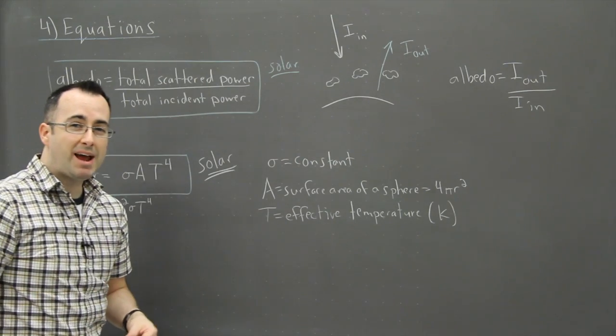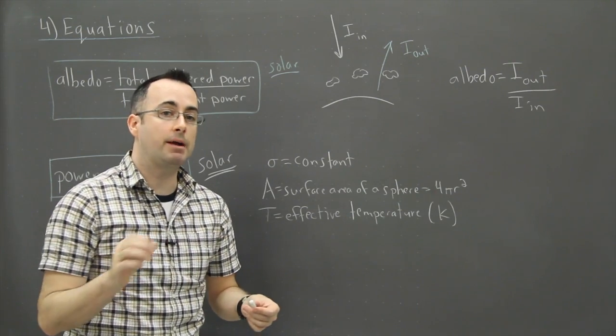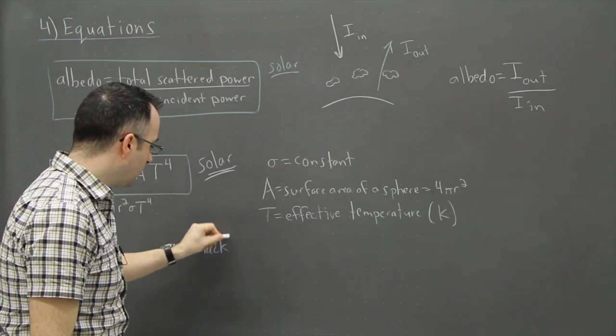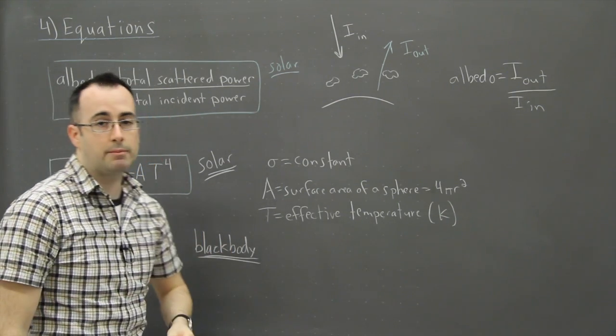Now what do I mean by an effective temperature? This is the key thing, is that we assume that stars are perfect black bodies. Okay, so this is, it's not a racist thing here. We actually assume that these are perfect things called black bodies.